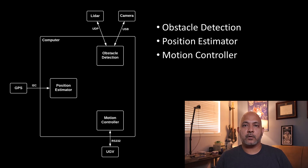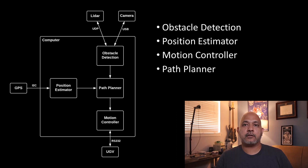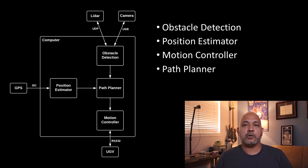I have a motion controller that connects to the motors and actually drives the vehicle, and then a path planner that takes in the obstacle detection output and the position estimation to figure out the actual path that we should be traversing in the world, using that path through the motion controller to drive the vehicle.